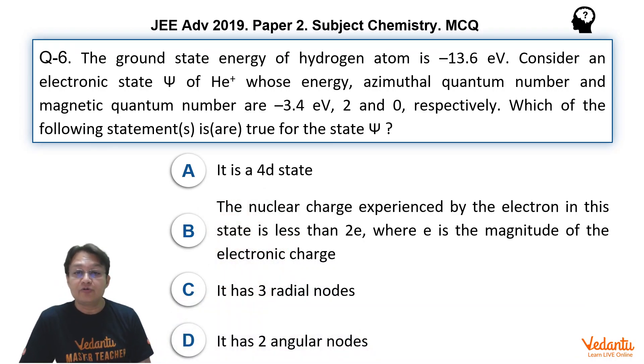The ground state energy of hydrogen atom is minus 13.6 electron volt. This information is given. Consider an electronic state of helium plus whose energy, azimuthal quantum number and magnetic quantum numbers are given: minus 3.4, 2 and 0 respectively. Which of the following statements are true for this state?